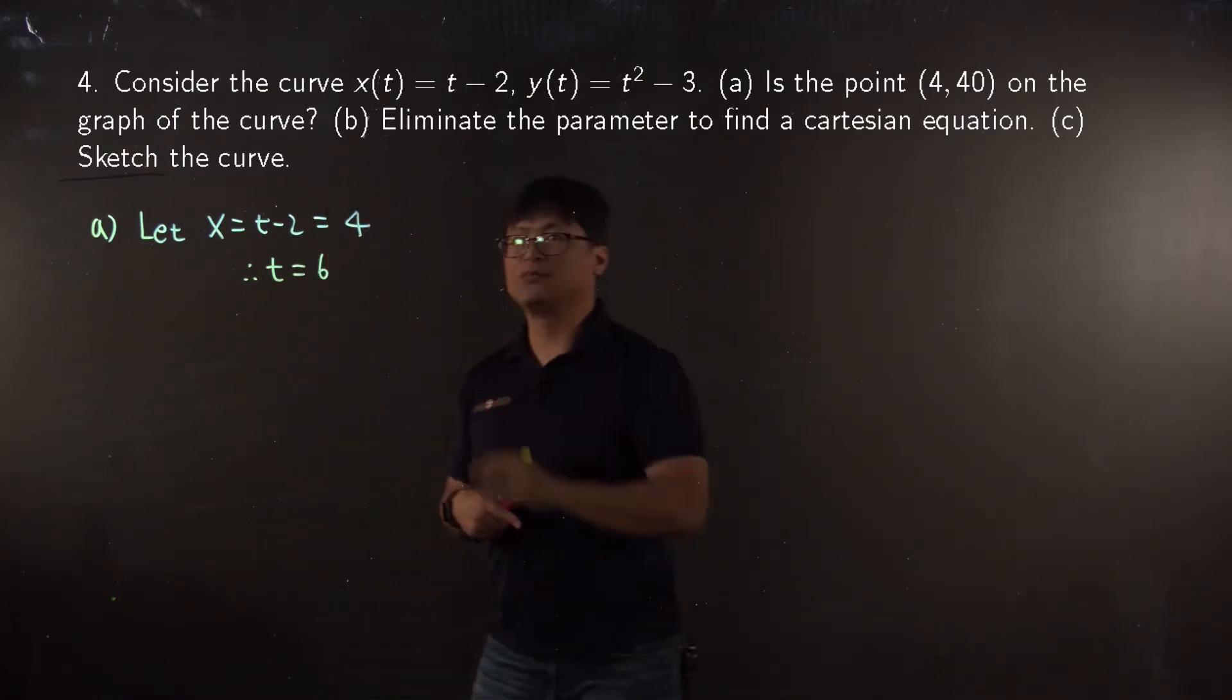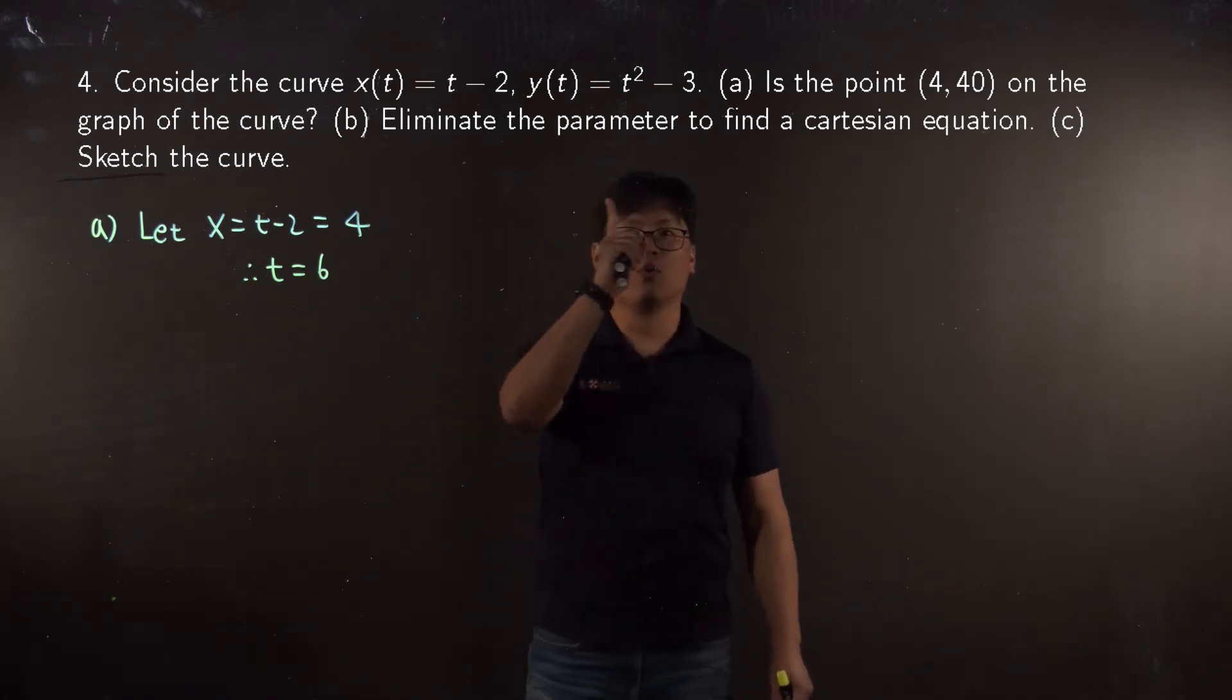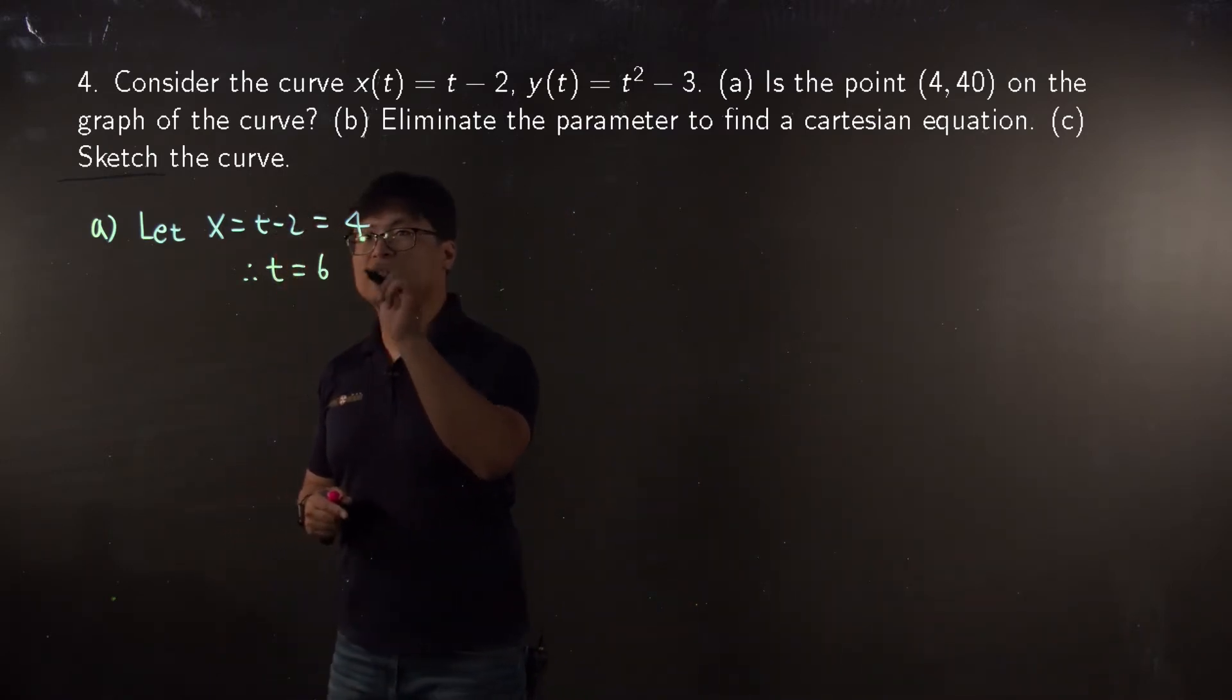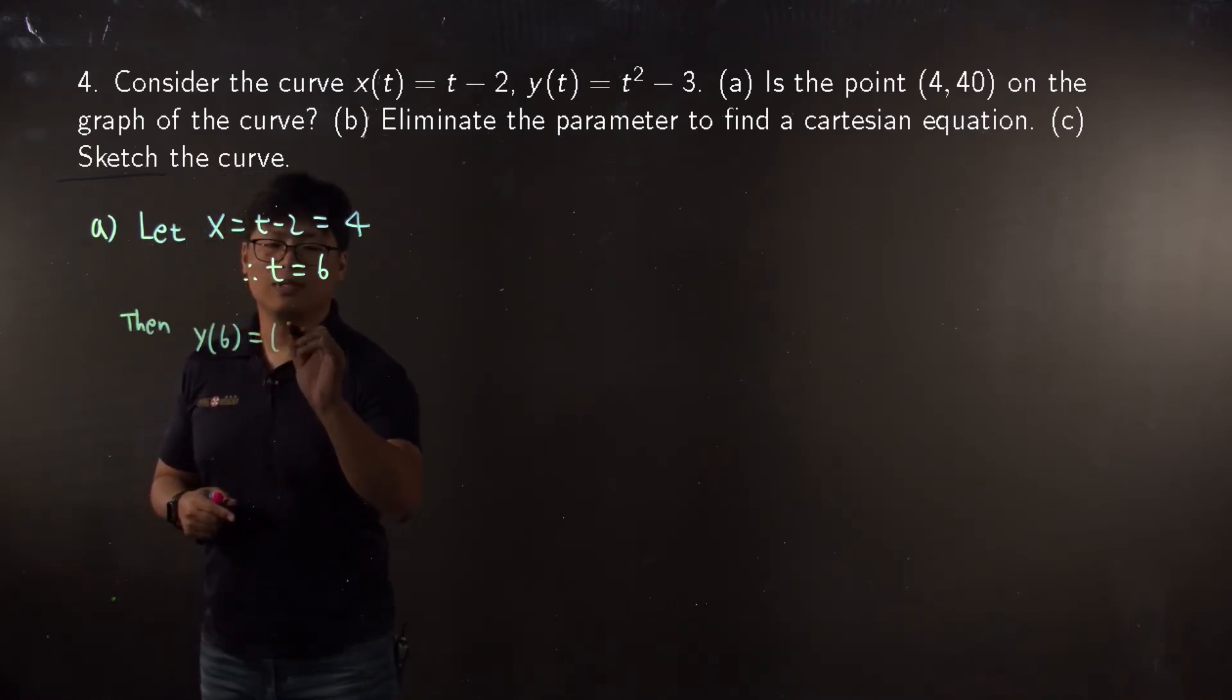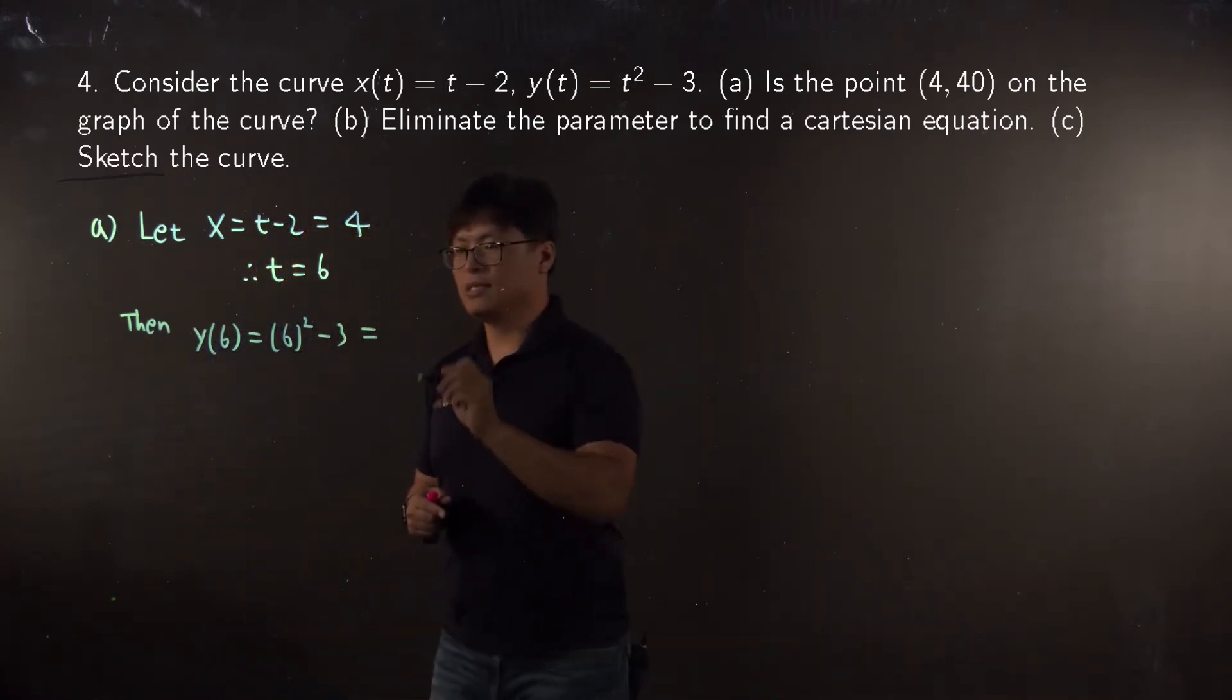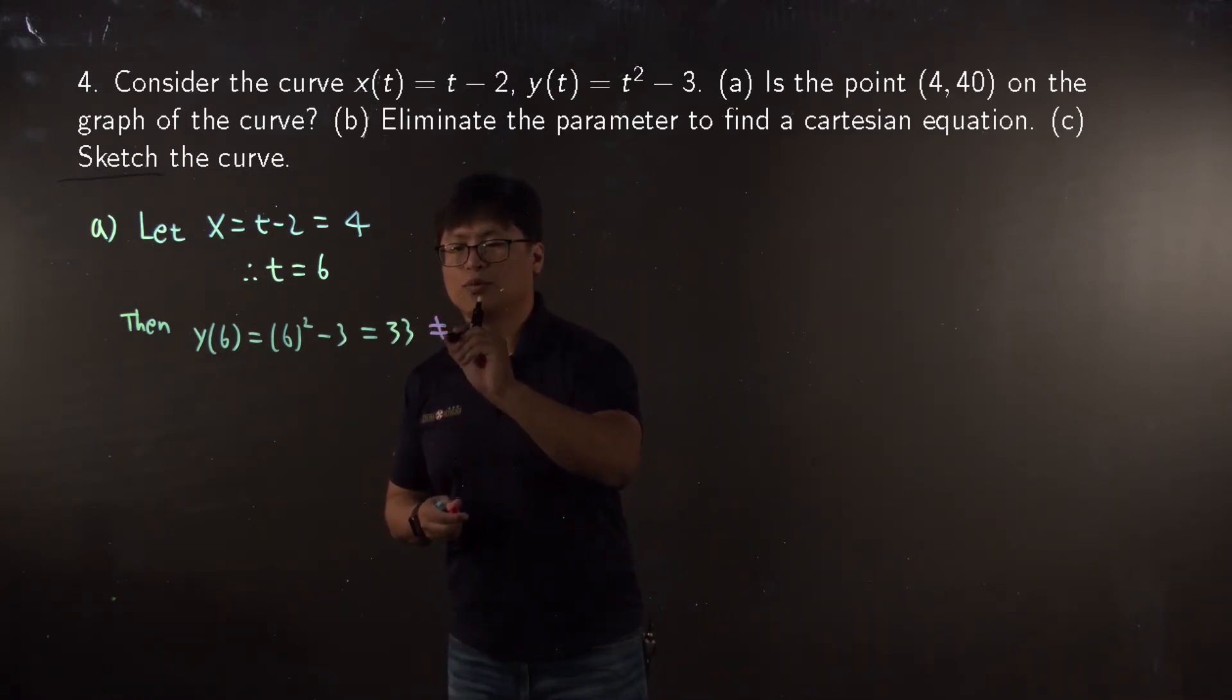But another thing is we have to make sure this parameter is working for your y component. So we're going to plug in t = 6 into your y component. y(6) is equal to 6² - 3, which is 33. Oh, it is not equal to 40.